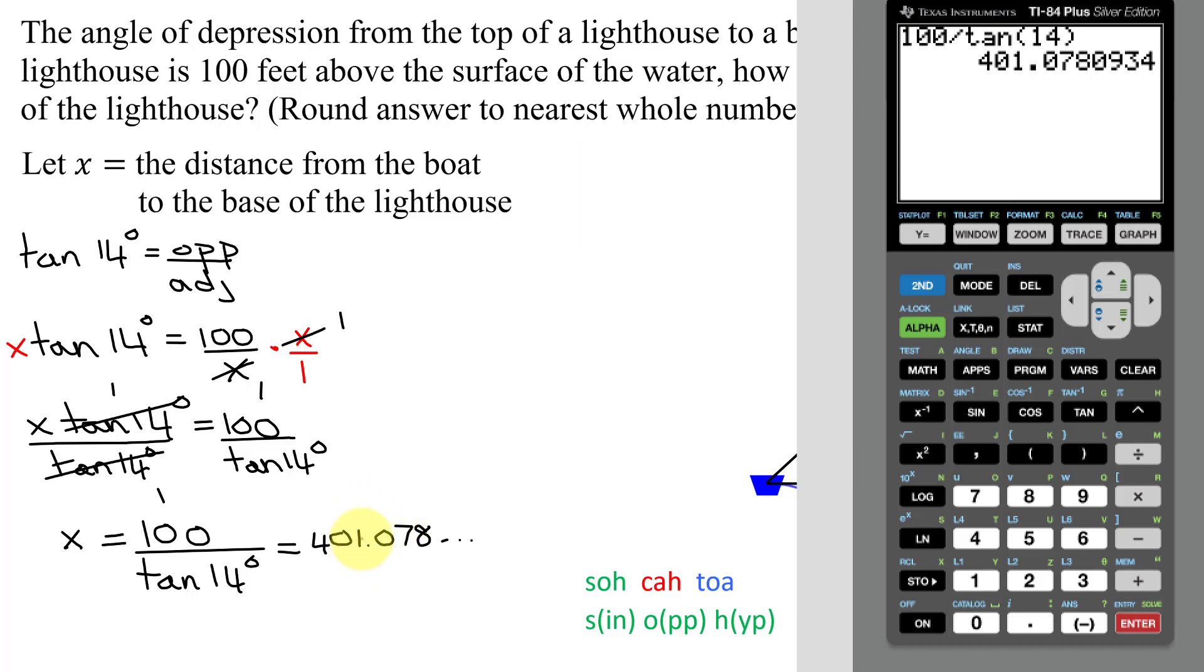And it said round to the nearest whole number, so that would be this figure there. So the zero is not going to affect it. So I know that X equals 401 feet. So my boat is approximately 401 feet from the base of the lighthouse.